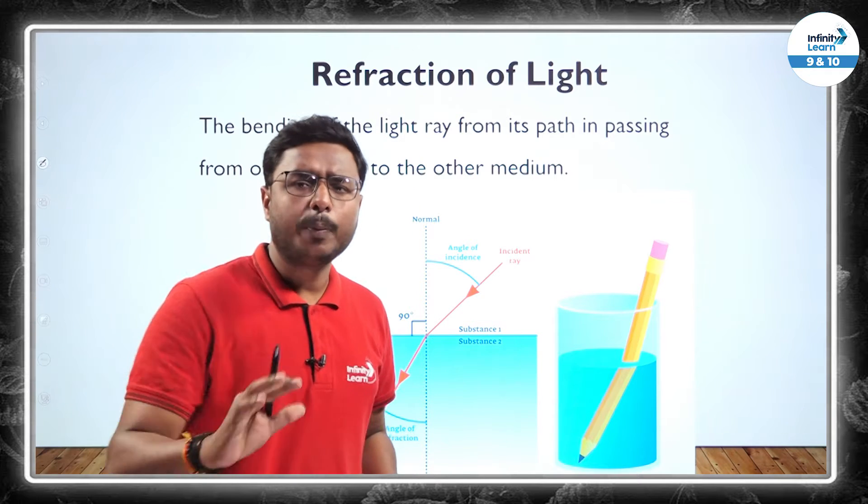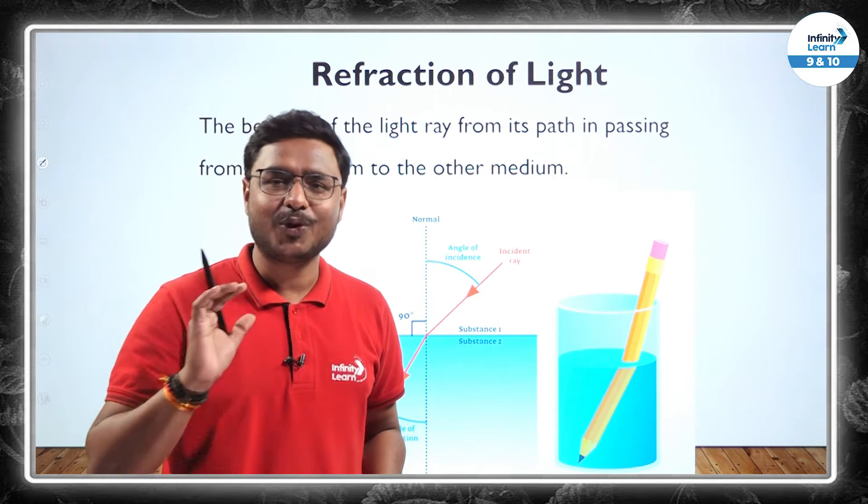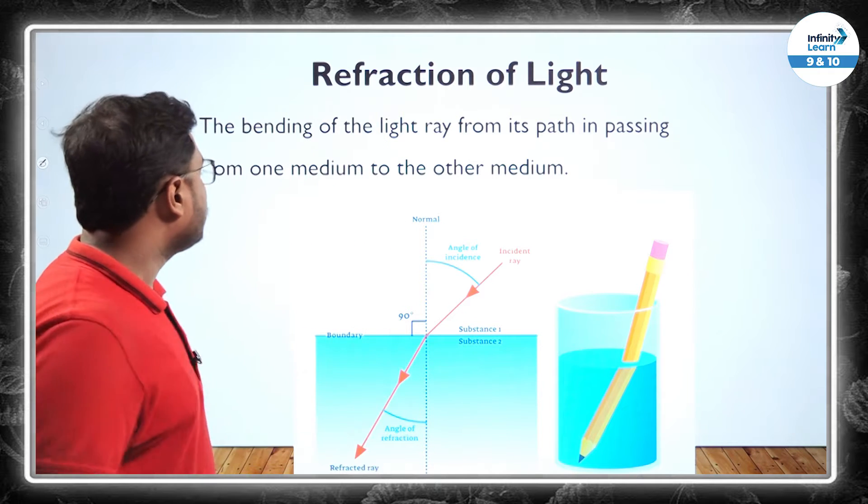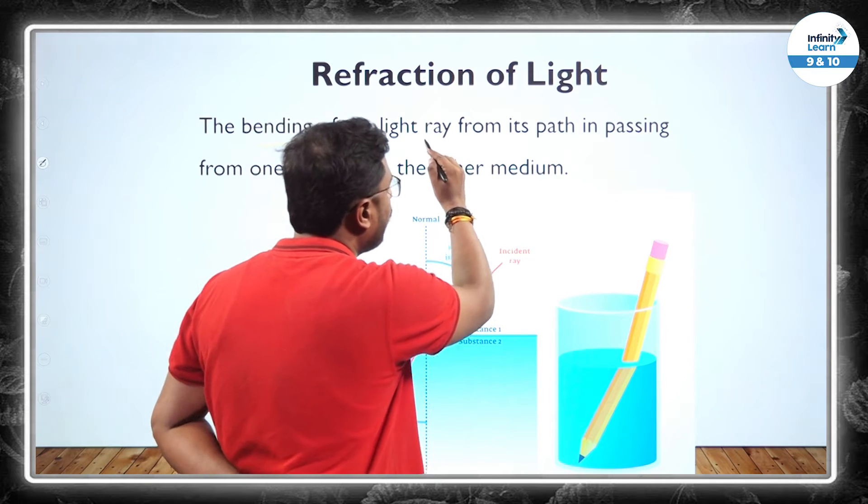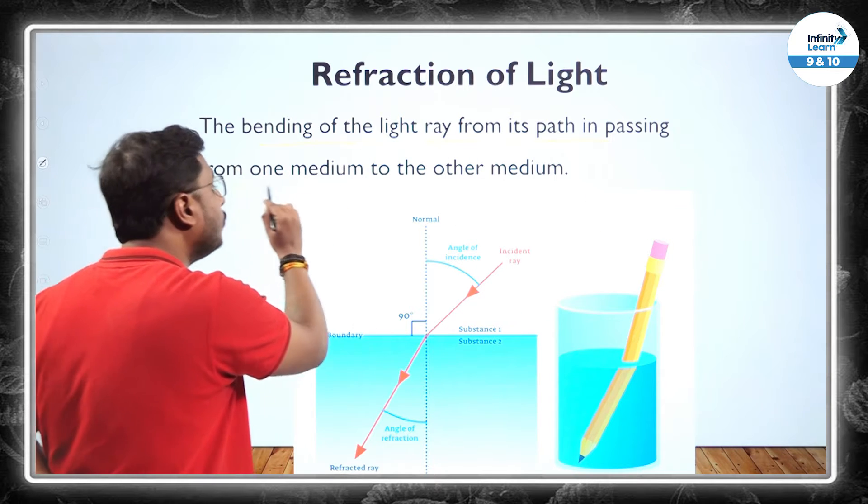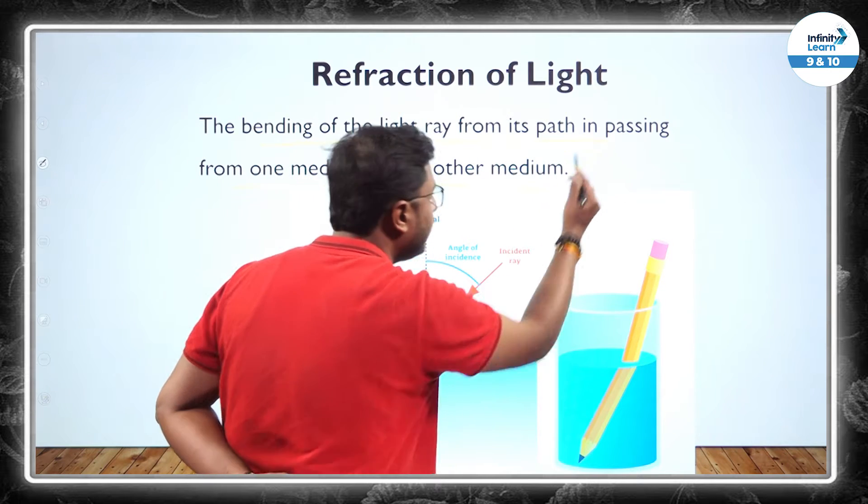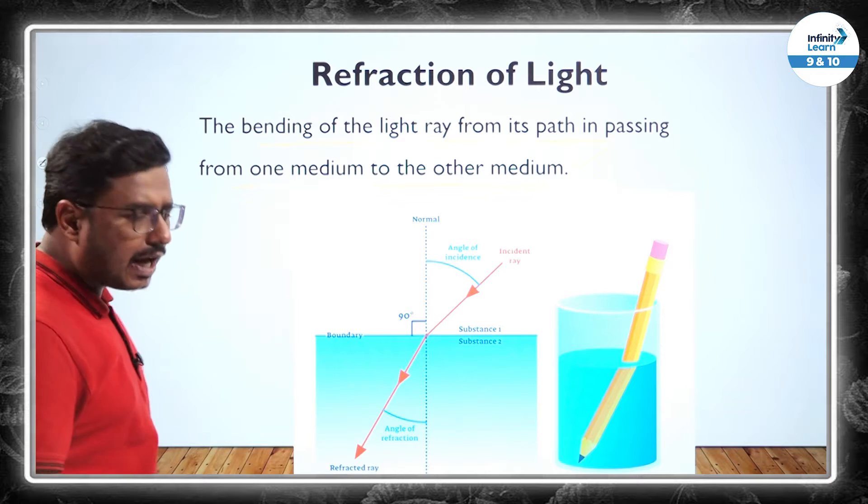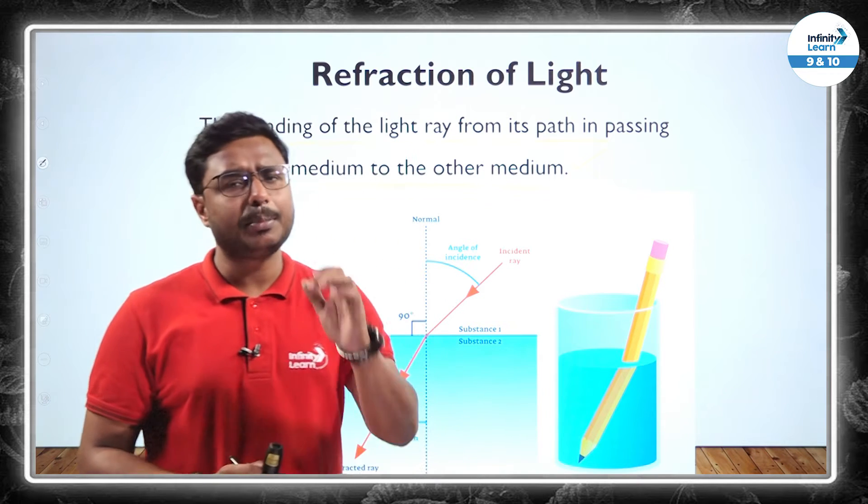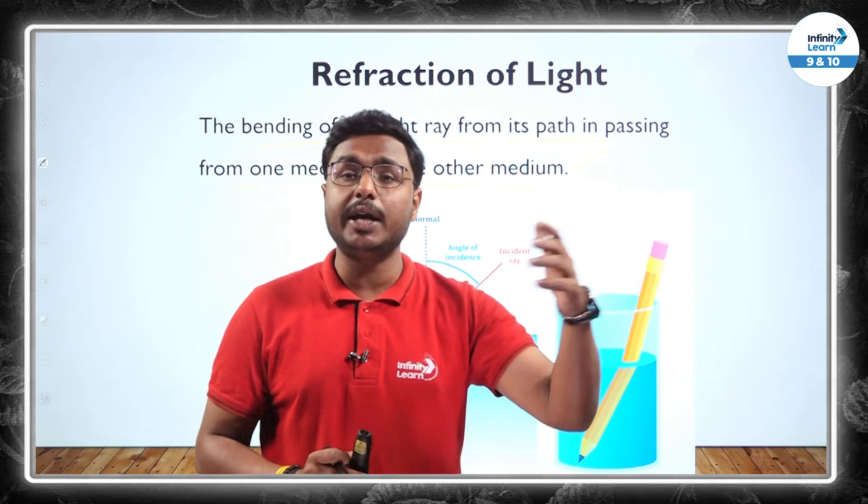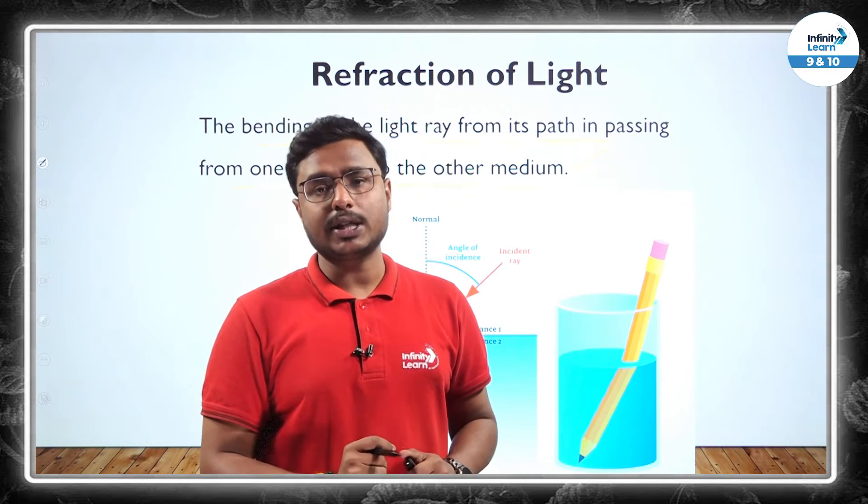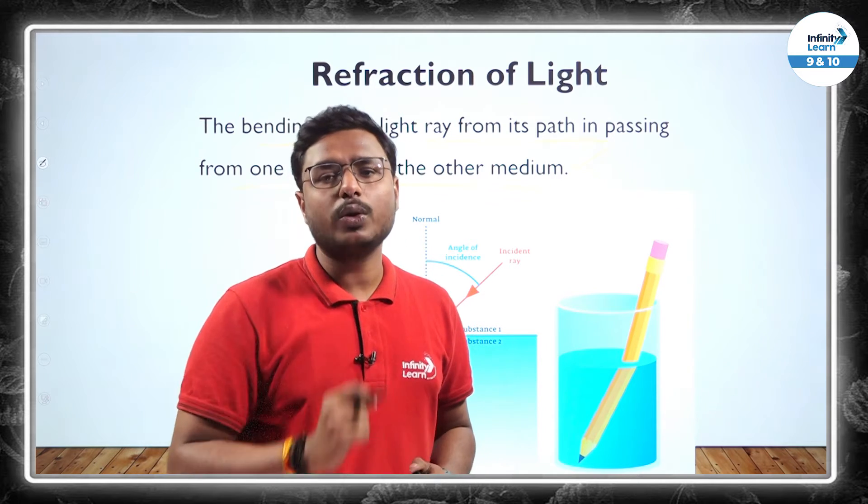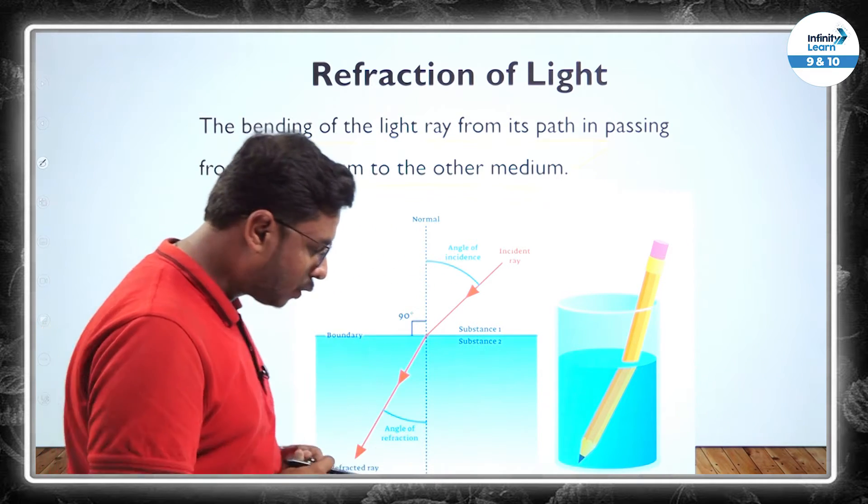Talking about refraction, I hope you all know about refraction, but let me give you a quick recap. The bending of light from its path in passing from one medium to the other medium, that is known as refraction. So in simple words, when light is passing from one medium to the other medium, the changes in the path that are deviated from its original path, that is known as refraction of light. You can see a simple example also here.